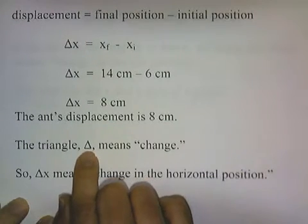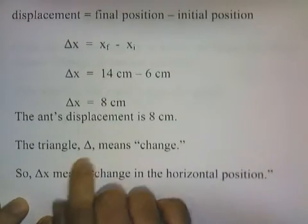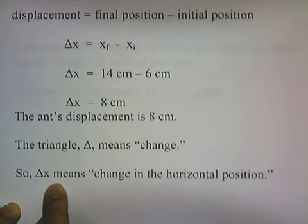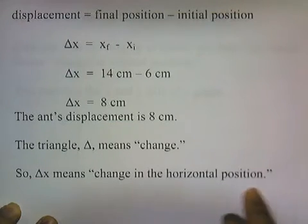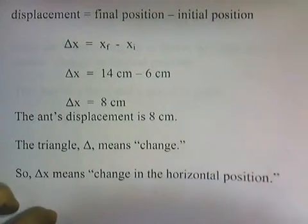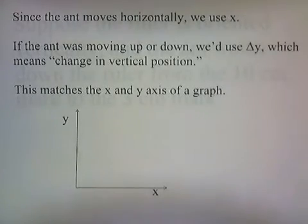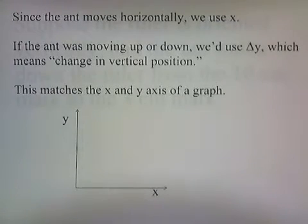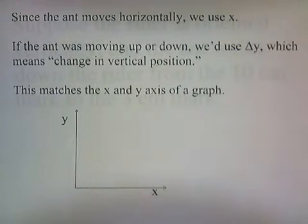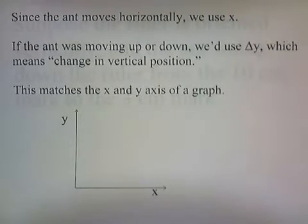This triangle symbol means 'change.' So delta x means change in the horizontal position. Since the ant moves horizontally, we use x. If the ant was moving up or down, we'd use delta y, which means change in the vertical position.